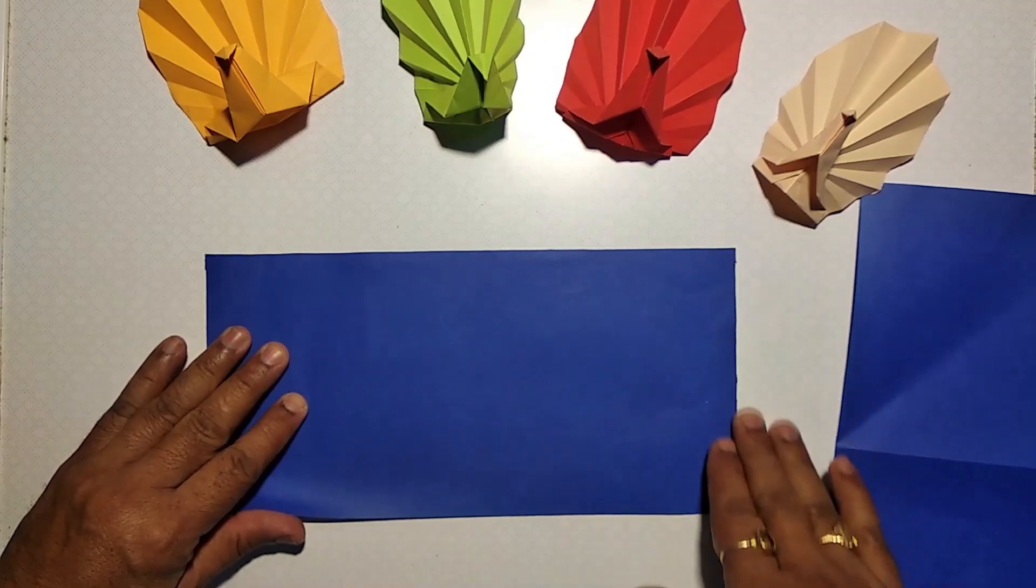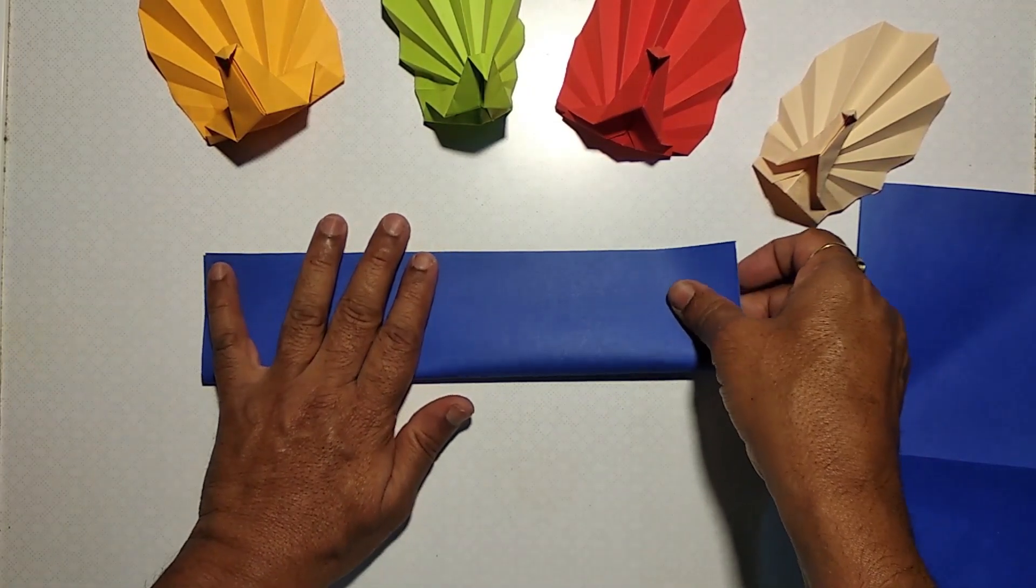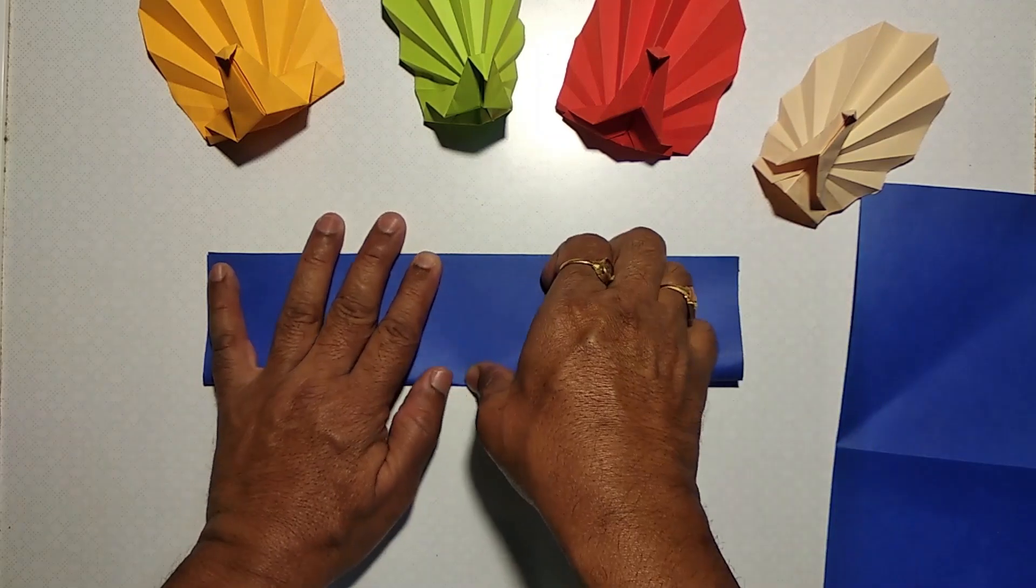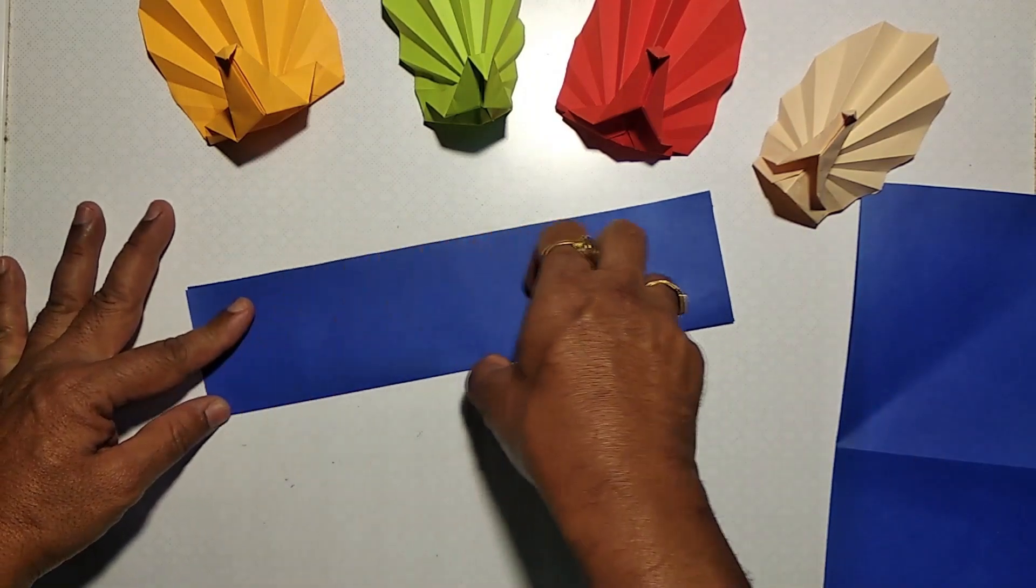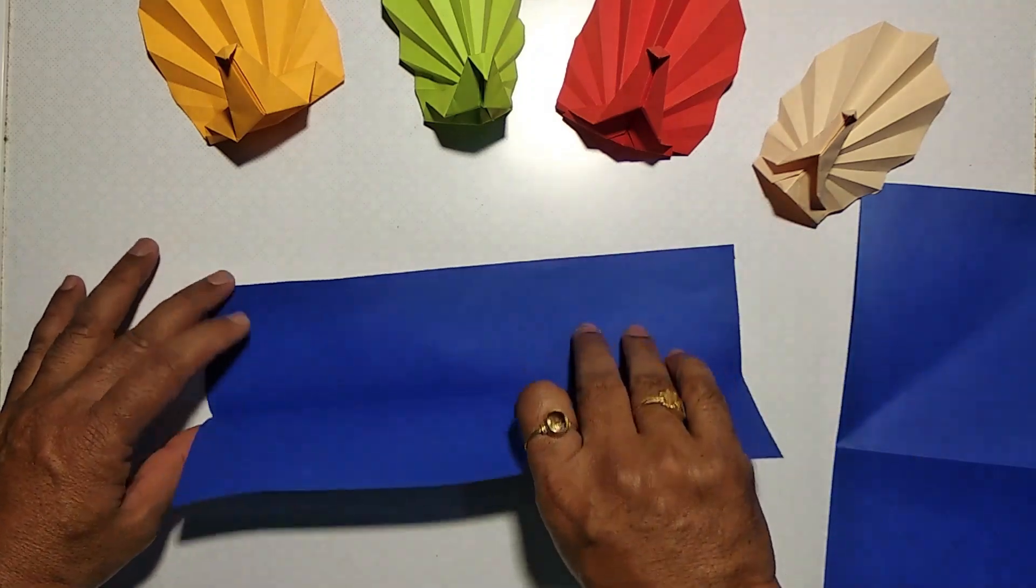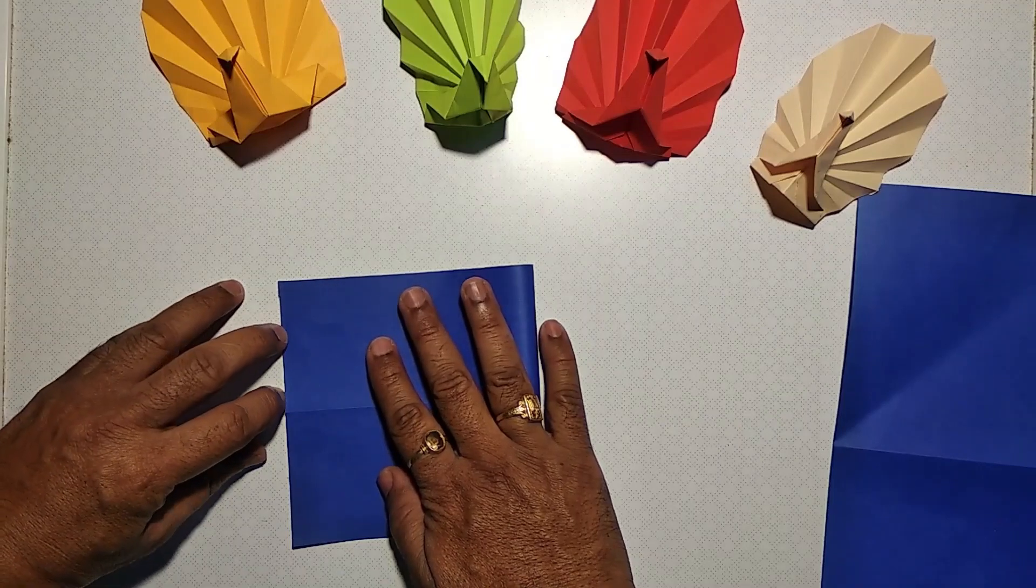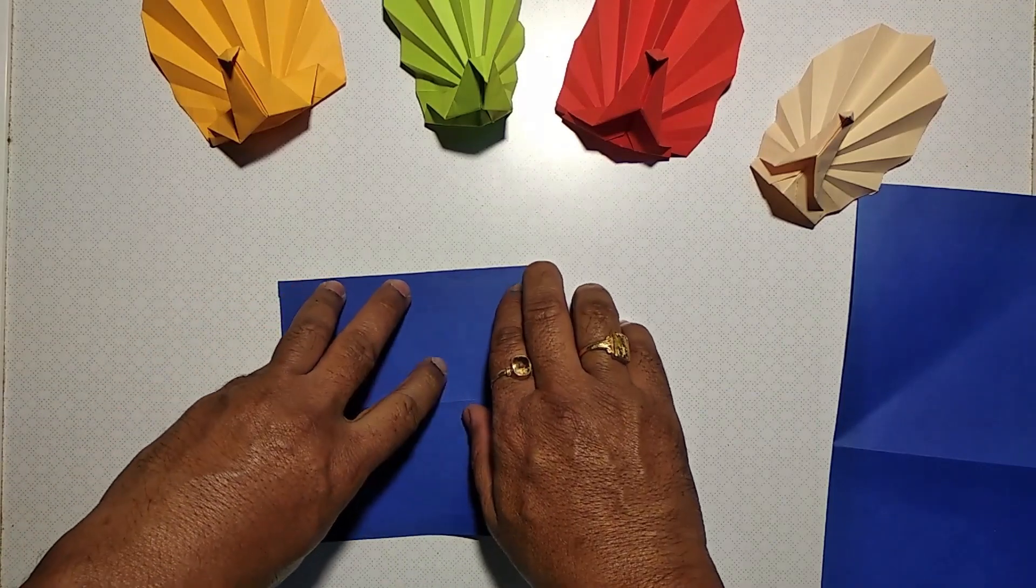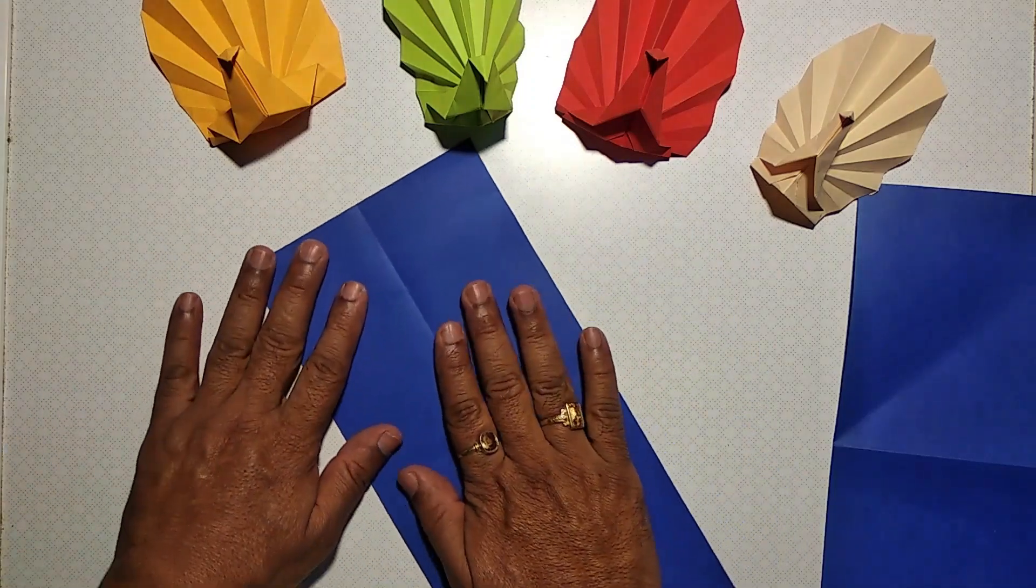Take one rectangular piece of paper with dimensions 2:1. Breadthwise, make it half, and lengthwise also make it half. We will be getting two new creases on the paper.